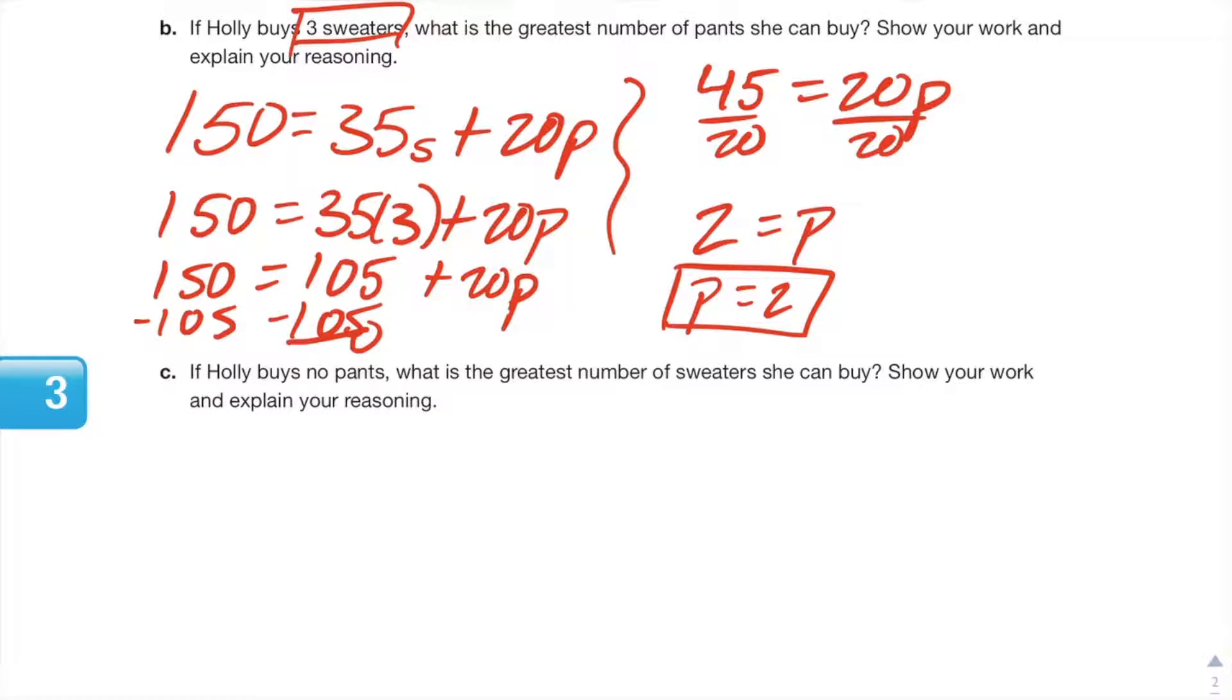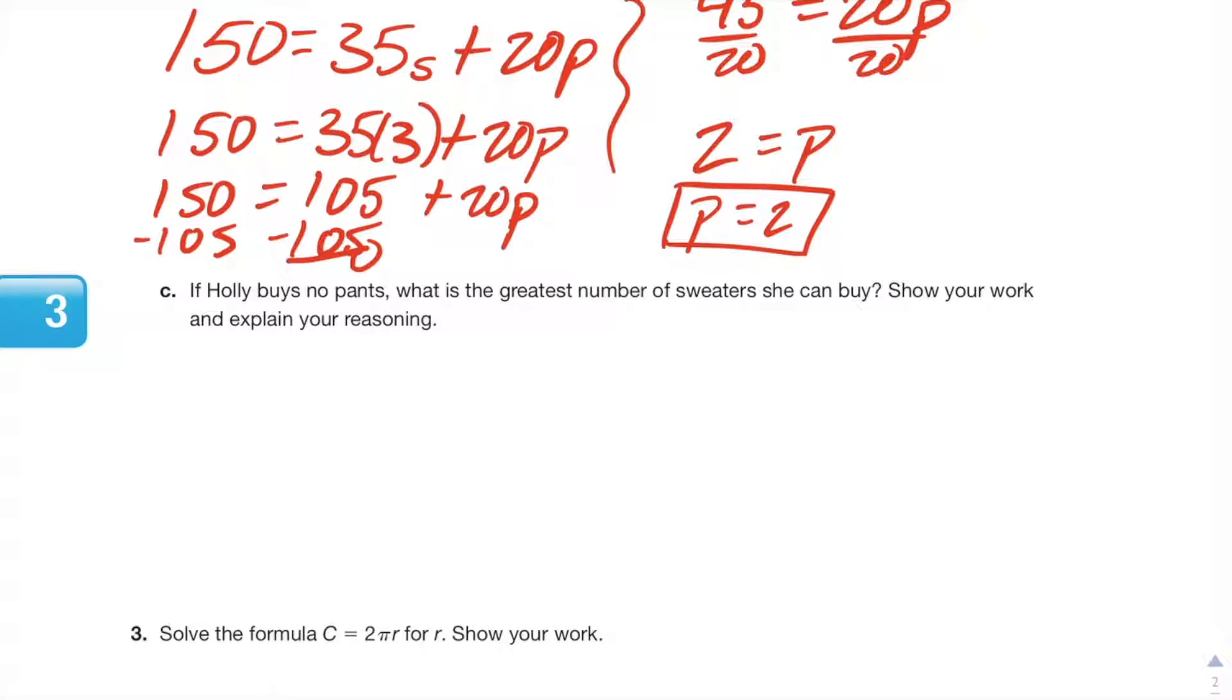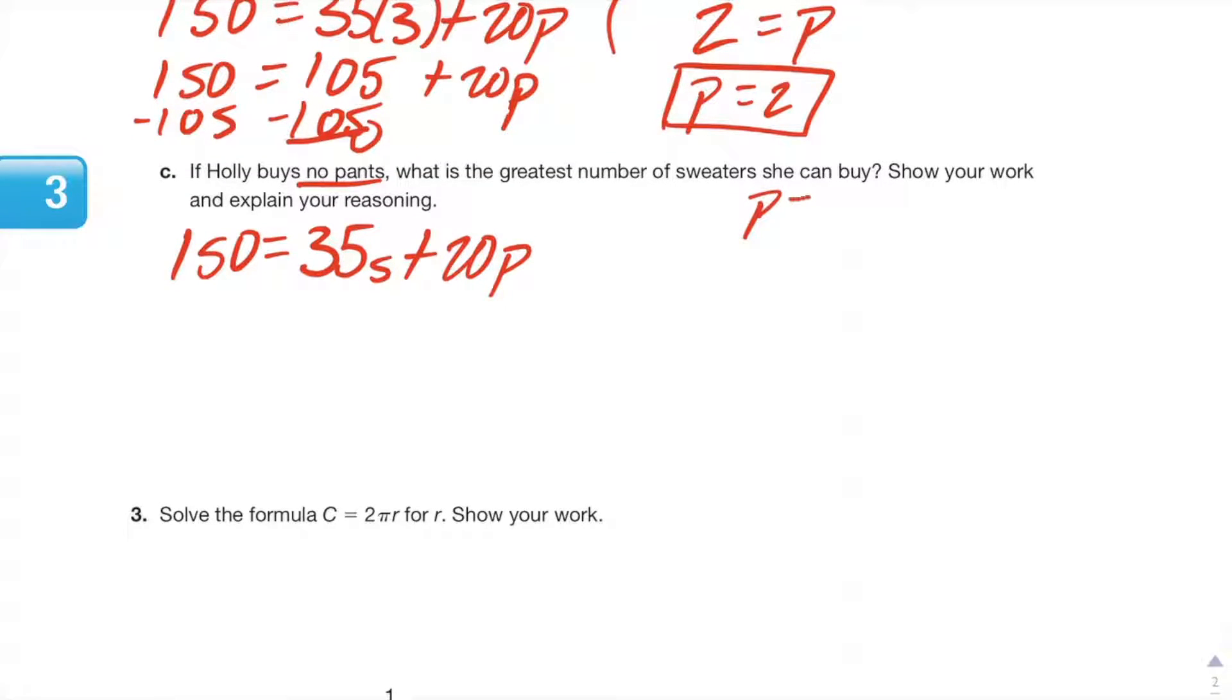Part C: If Holly buys no pants, what is the greatest number of sweaters she can buy? Show your work and explain your reasoning. Okay, so again we're always going to start with the formula 150 = 35s + 20p. She buys no pants so that means p equals zero and that's what we're going to plug in. 150 equals 35s, divide by 35 on both sides.